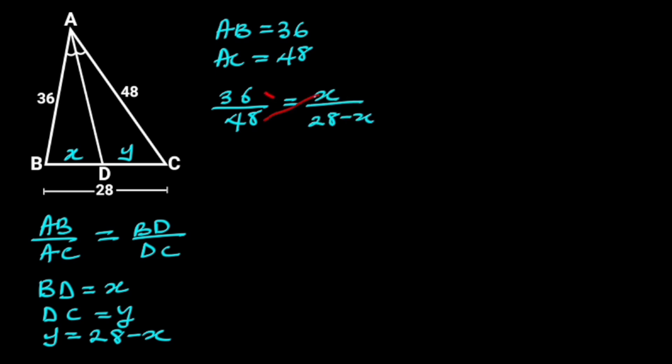By cross multiplication, we will have 36 times 28 minus X is equal to 48X.